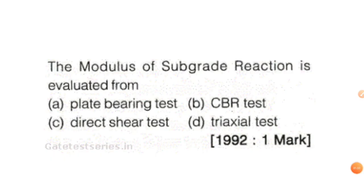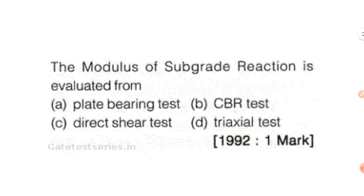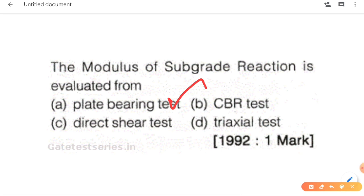Next question: the modulus of subgrade reaction is evaluated from — what is the test? The options are plate bearing test, CBR test, direct shear strength, or triaxial test. Direct answer: in the modulus of subgrade reaction, we use the plate bearing test. So our answer is A.